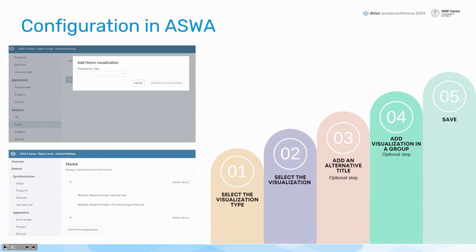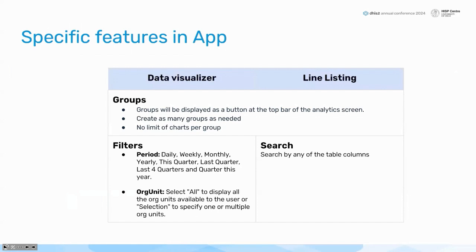I'll show this in the demo, but here's a quick summary. You use the application interface — there are five steps: first, select the visualization type, which could be an event or data; then select the visualization; add an alternative title because some names are very long and loading won't be easy with Android; add a visualization to a group; and then save — saving is the last step.